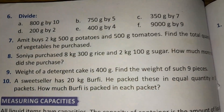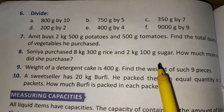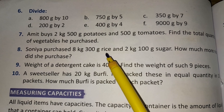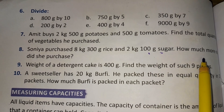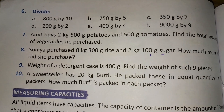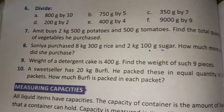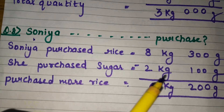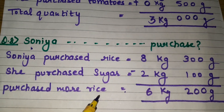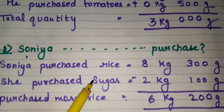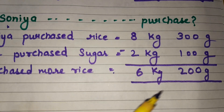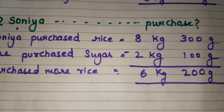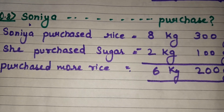Next, question number 8: Sonia purchased 8 kg 300 grams rice and 2 kg 100 grams sugar. How much more rice did she purchase? Sonia purchased rice 8 kg 300 grams, she purchased sugar 2 kg 100 grams. To find how much more rice she bought, we subtract sugar from rice. 0-0, 0-0, 3-1 is 2, 8-2 is 6. So she bought 6 kg 200 grams more rice compared to sugar.